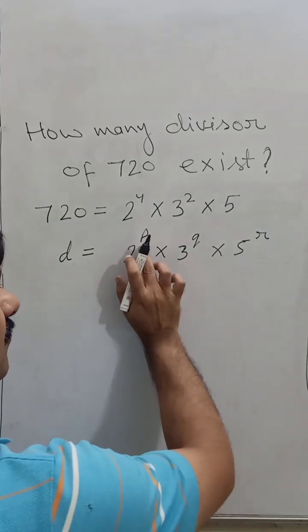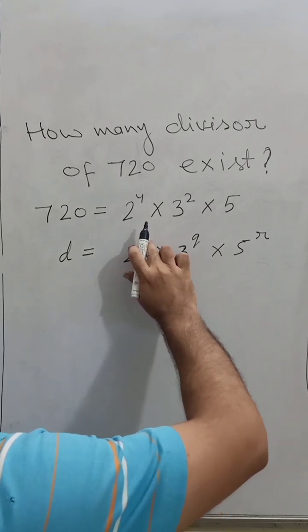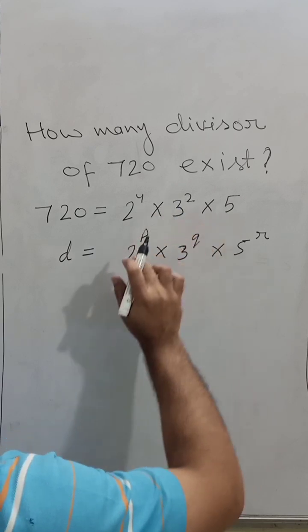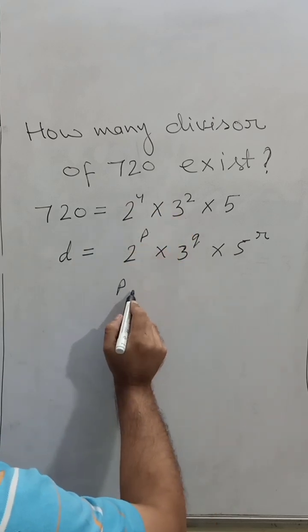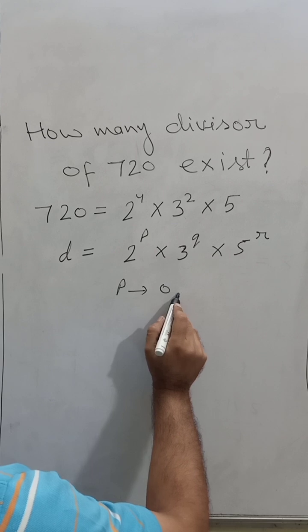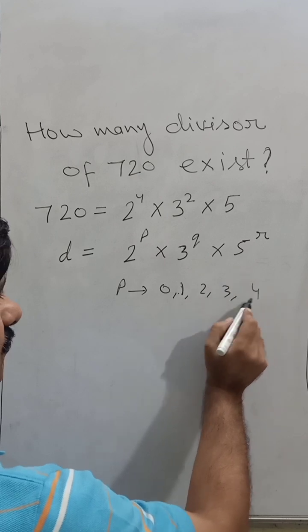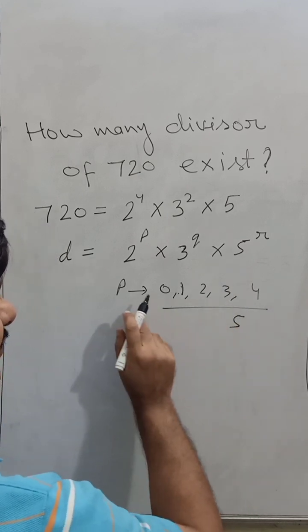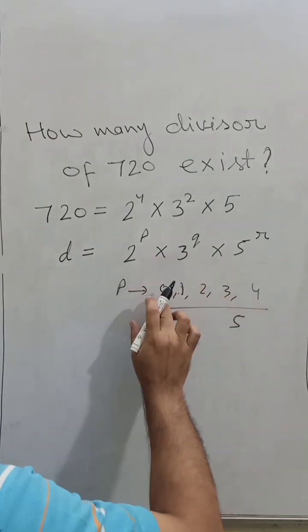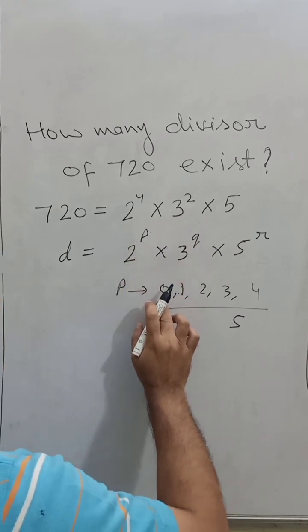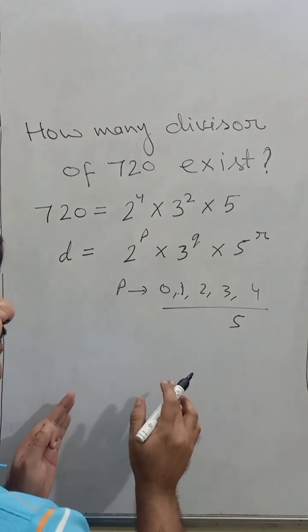Let's find out about the P, Q, R. How many types of P can exist so that it can divide? The power of 2 here is 4, so P can run from 0, 1, 2, 3, 4. The value of P can exist in 5 forms. So for P, 5.